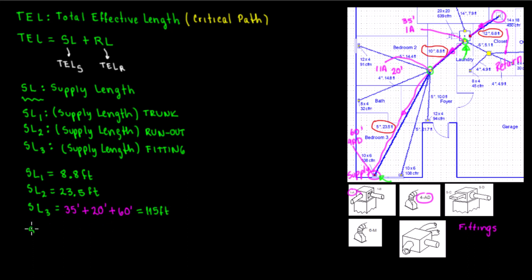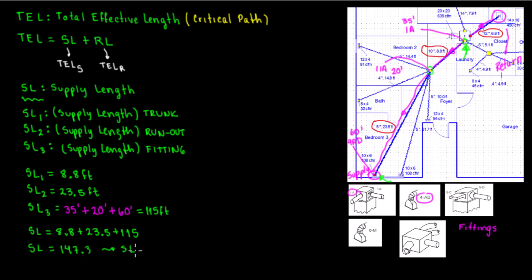The total supply side length — TEL of supply — is equal to 8.8 plus 23.5 plus the equivalent length of the fittings (115 feet), giving us 147.3 feet. Rounding up, the supply side total effective length is 148 feet.